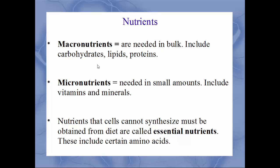Macronutrients are what you need in bulk — that's where the macro comes from. These include proteins, carbohydrates, and lipids. The micronutrients are what are needed in small amounts, and what are included here are the vitamins and minerals.